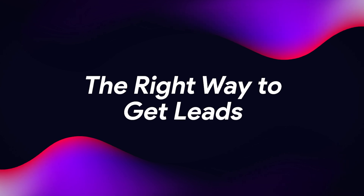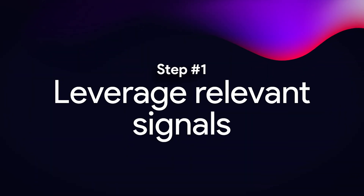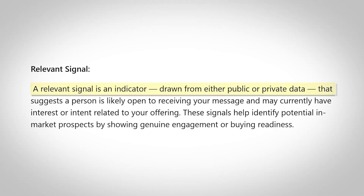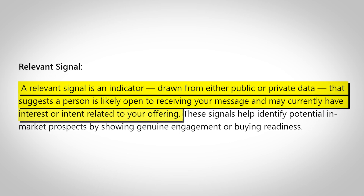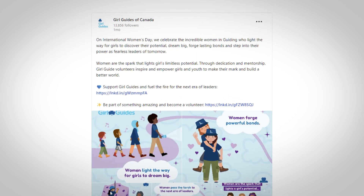So what is the right way to get leads? Step one is to leverage relevant signals — you need to make sure the people you're outreaching to actually want to be outreached to. A relevant signal is some sort of indicator, whether public or private data, that this person might actually be in market. The best relevant signals can be things like if they've commented on a post, recently fundraised, or put out a news article. Timing makes up a big part of response rate — the better you time your message to align with their buying window, the more likely you are to get a response.